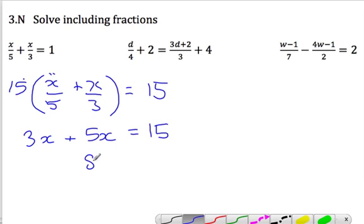And so we get 8x now, collecting like terms, equals 15. Divide both sides by 8, and we get 15 over 8. I'm quite happy with top-heavy fractions like that one. How about you? I'm okay with that too, as long as you can't simplify it anymore.